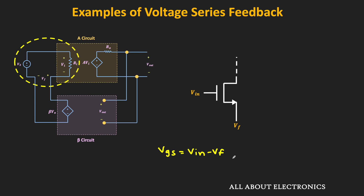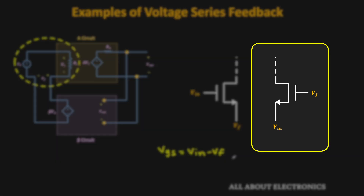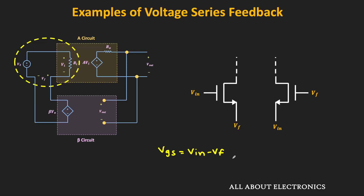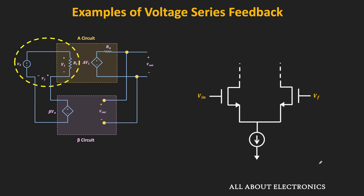Alternatively, we can apply the feedback signal to the gate terminal and the input signal to the source terminal. In that case, Vgs = Vf − Vin. So in either case, a single transistor can subtract the two voltages. Apart from that, we can also use a differential pair to subtract the two voltages, where one input of the differential pair is Vin and the other is Vf, thus performing the series mixing.